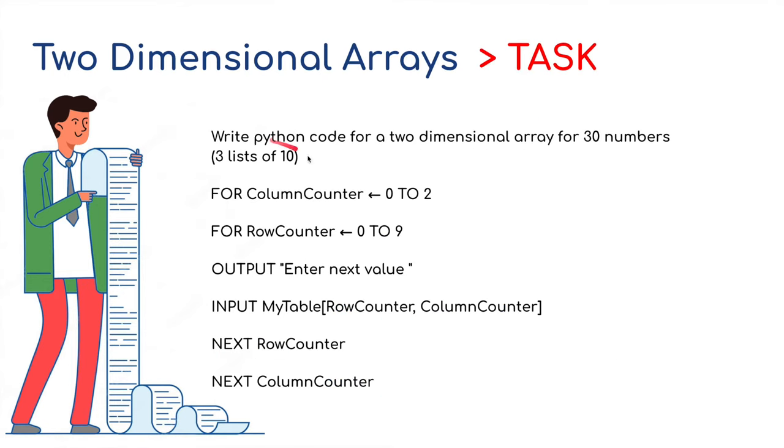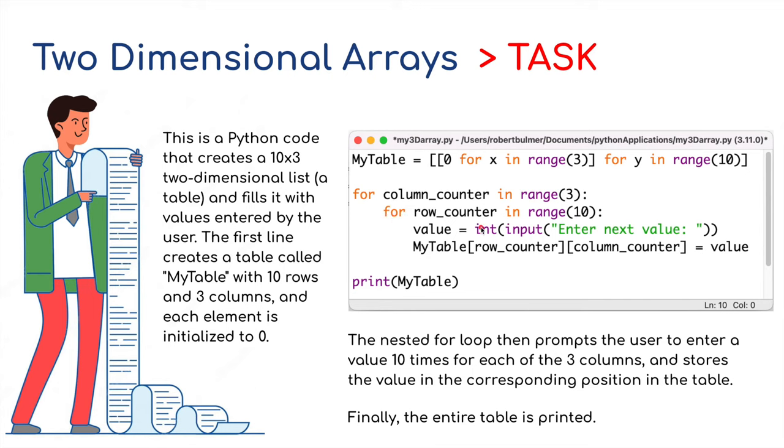Another task, write Python code for a two-dimensional array for 30 numbers, three lists of 10. It's a little bit difficult, this, if you're not familiar with these things. So I have got an example straight after this, but if you want to have a go, use the pseudocode example and see what you can come up with.